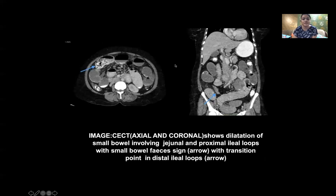The next case shows axial and coronal CT demonstrating dilatation of small bowel loops involving jejunal and proximal ileal loops. We can also see the small bowel feces sign, as indicated by the arrow, with a transition point in the distal ileal loops.